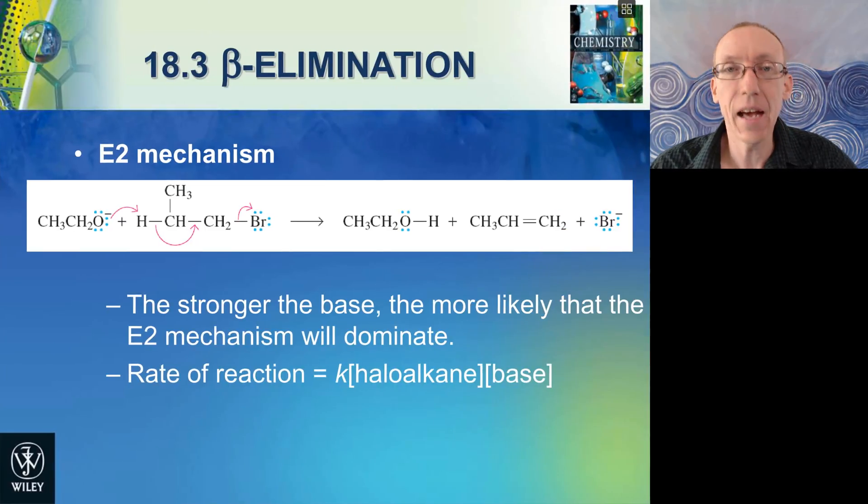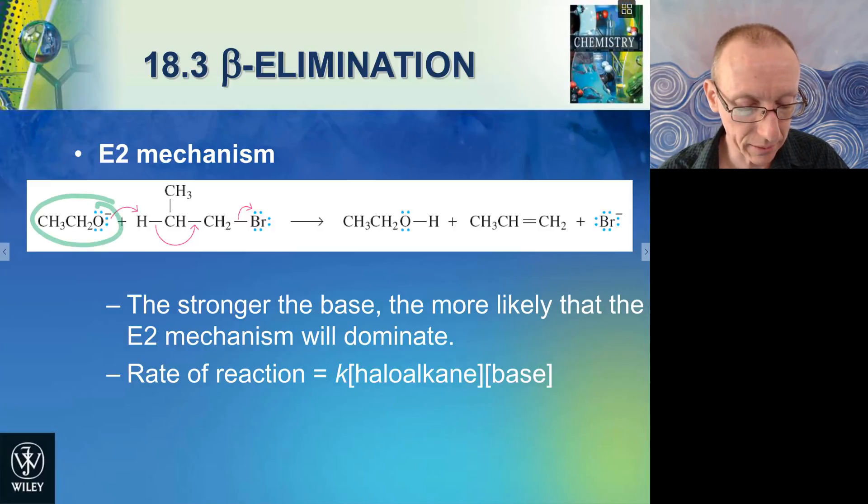So the other major elimination reaction mechanism is the E2 mechanism. This is where the elimination all happens in one step, with bond breakage and bond formation all happening at the same time. So we would normally have a strong base like ethoxide, it pulls off a proton, we break this bond here, and we lose the leaving group all in one go.